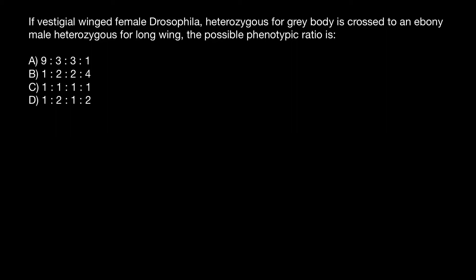Hello and welcome to Nikolai's genetics lessons. Today I got a very interesting problem from one of my subscribers from India. Here's the problem: If vestigial winged female Drosophila heterozygous for gray body is crossed to an ebony male heterozygous for long wing, the possible phenotypic ratio is, and you have to choose the correct answer.